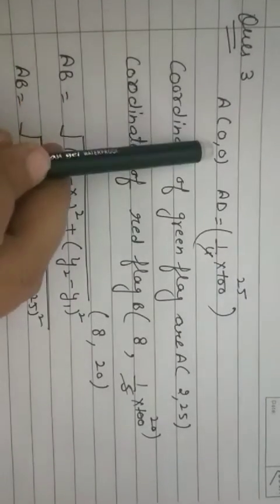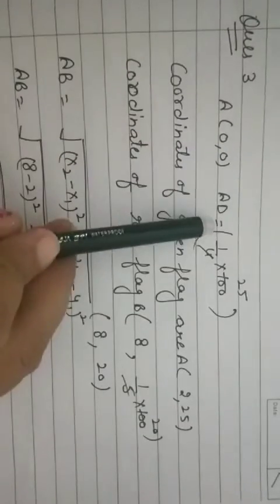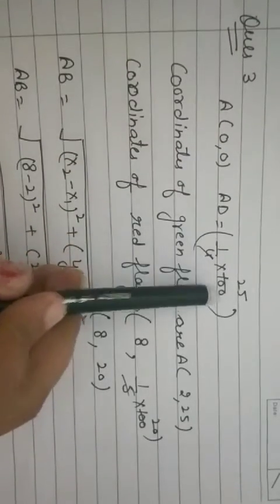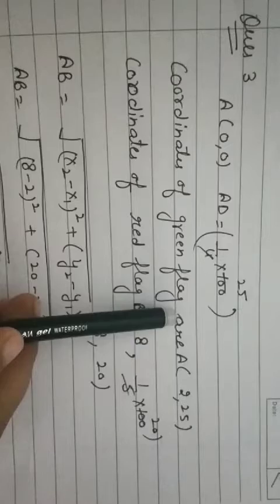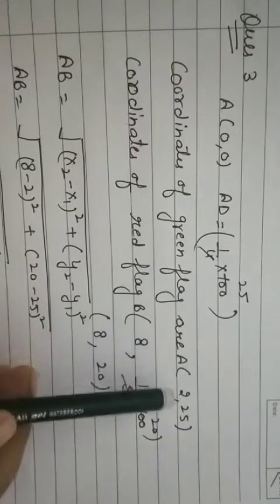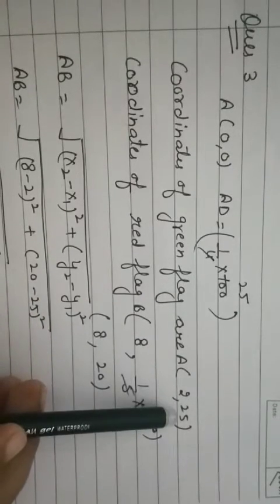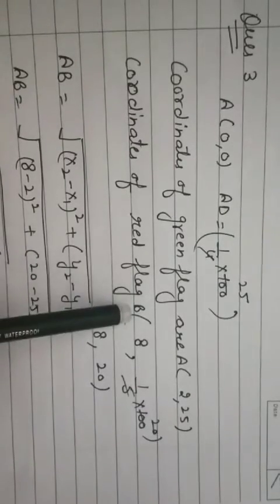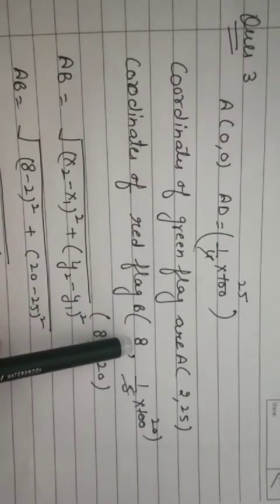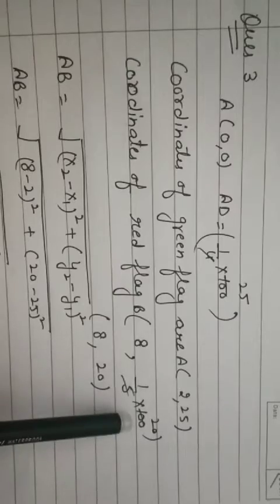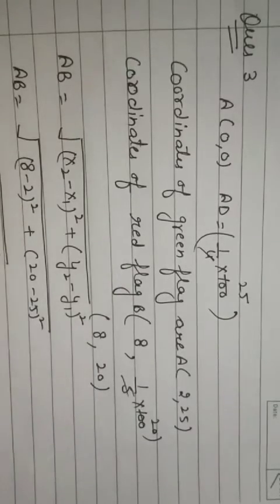A, origin is at 0, 0. AD, 1 over 4 multiplied by 100. So this is green flag, I've taken it as A. So its coordinate is 2, 25. Red flag I've taken as B. So 8th line, 1 over 5th of 100. So this is 8, 20.